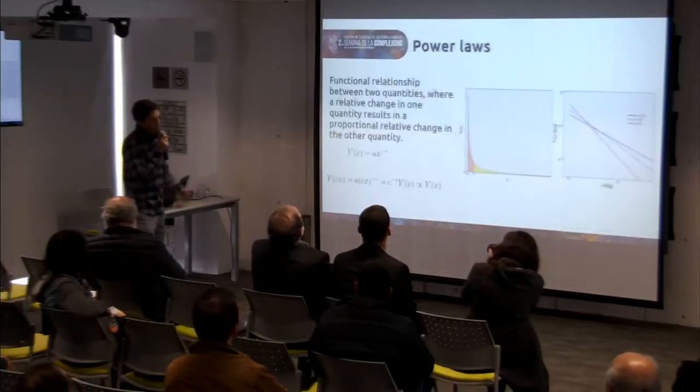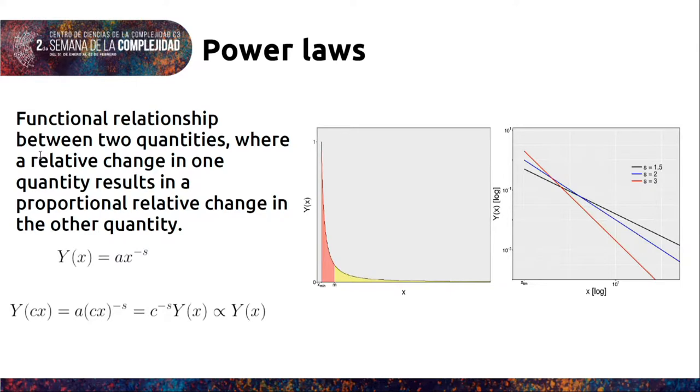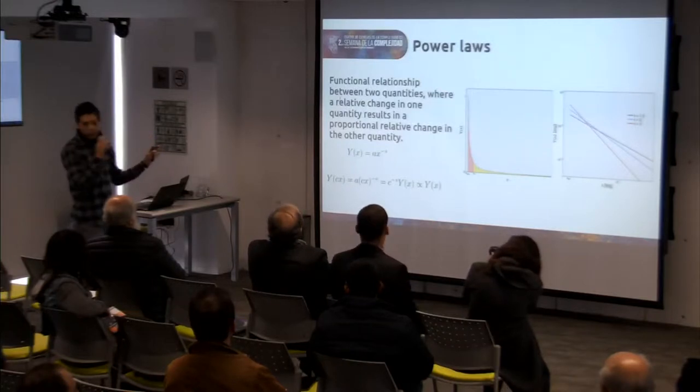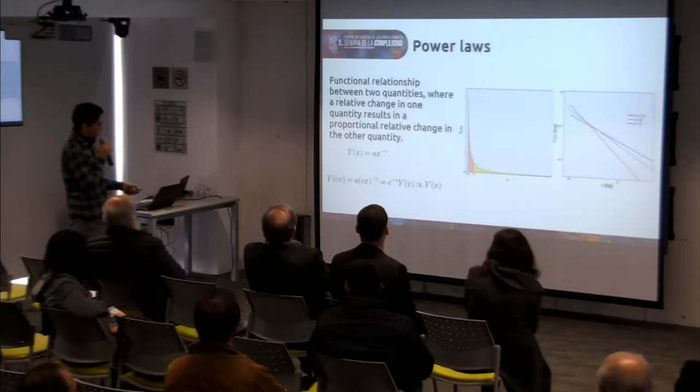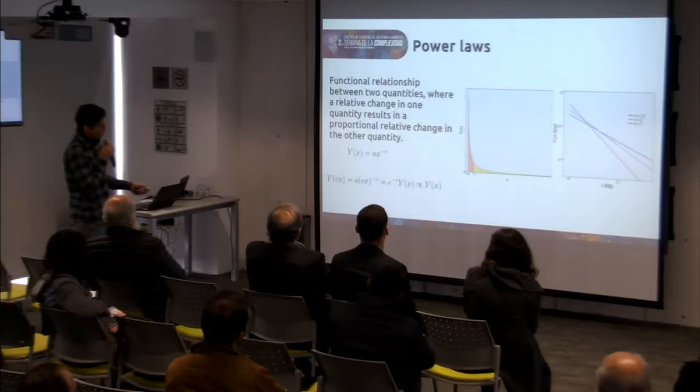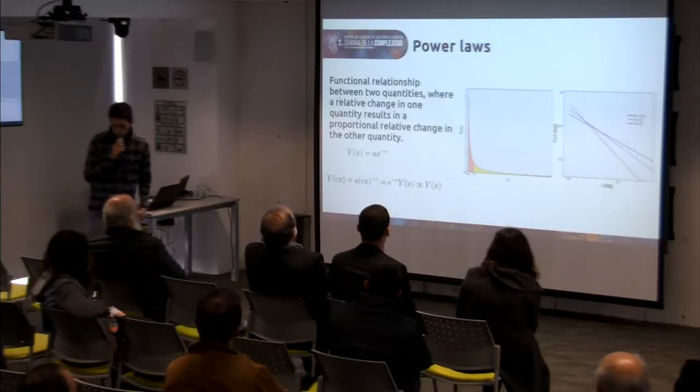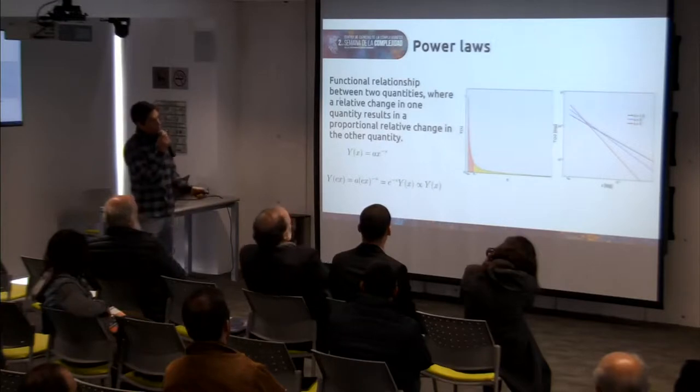Power laws are written in this way. And the thing that power laws share with fractals is the scale invariance. It's a type of self-similarity. If you do a change in the scale, you get something proportional to the original function. And in a linear plot, we can see power laws like this, but it's very difficult to identify them. So what we do is to plot in a logarithmic plot, and then we can see a line with a slope corresponding to the exponent.